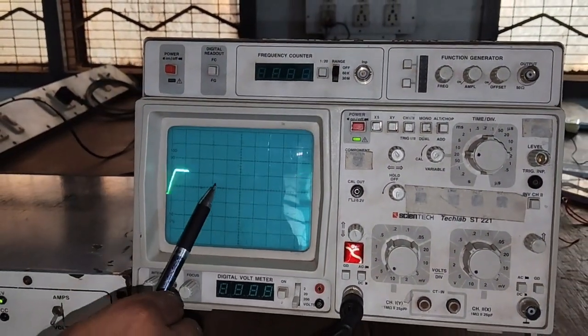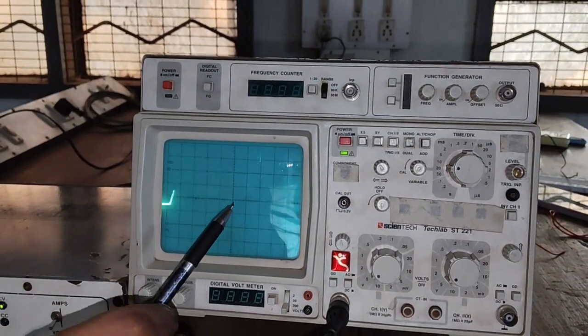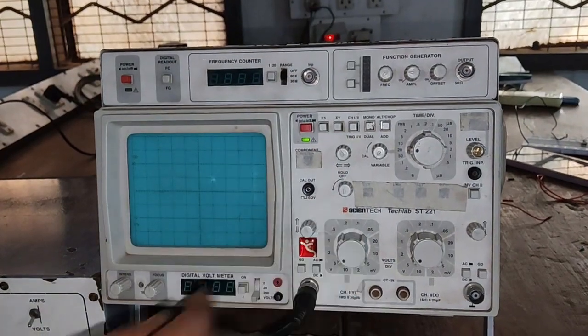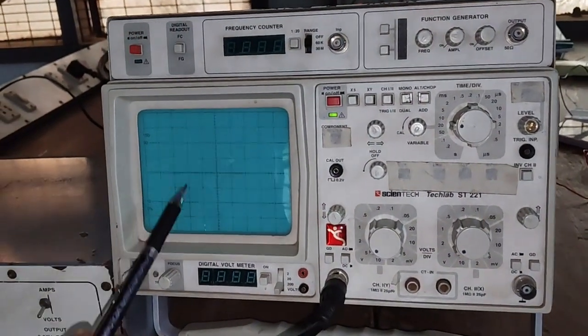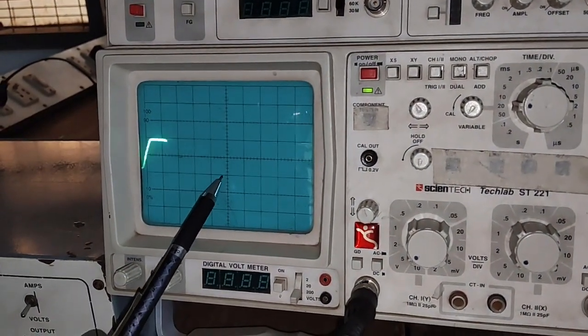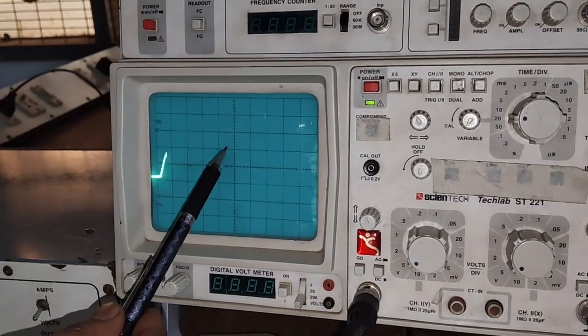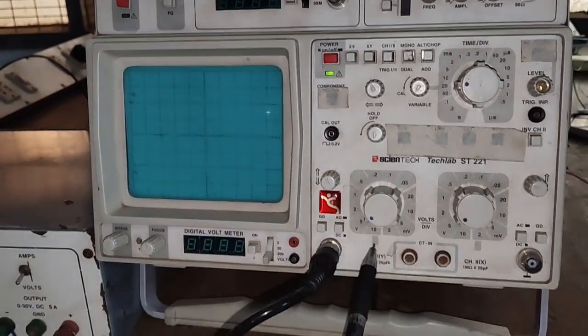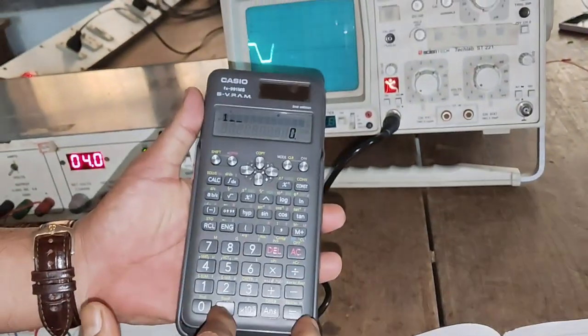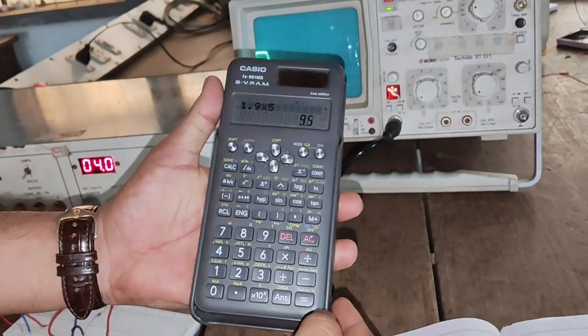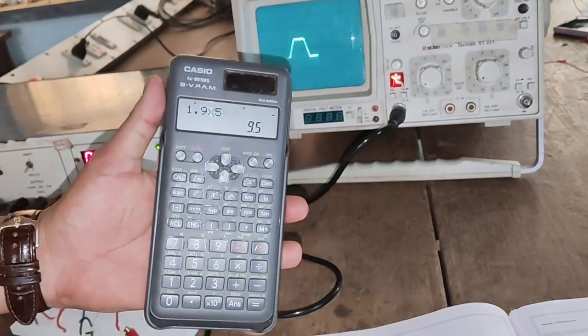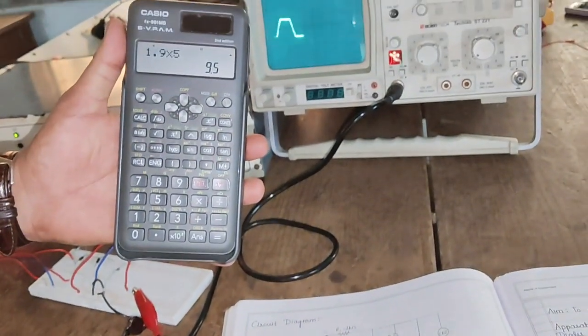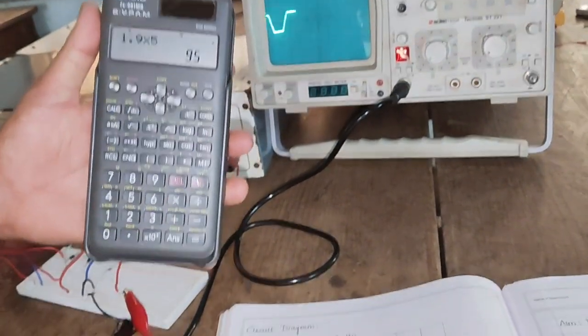Hence, the 32 volts here turns out to be almost 9.6 volts. Here we can see that its value is almost 9.6 volts. In this way, we perform the combination clipper using two diodes. Thank you.